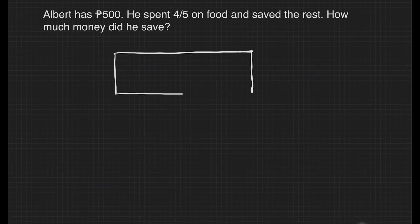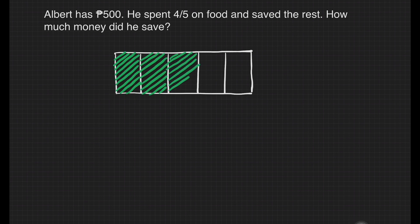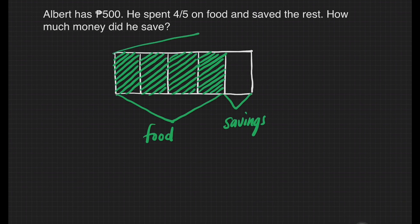We'll still use the block model in solving this problem. Let's draw the box — it has to be divided into five equal parts. Let's shade 4 fifths of this box because it was spent on food: 1, 2, 3, and 4. This part is spent on food and this part was Albert's savings. The total value of this box is 500 pesos. So if 5 boxes is equivalent to 500, how will we get the value of 1 box? Just divide 500 pesos by 5.